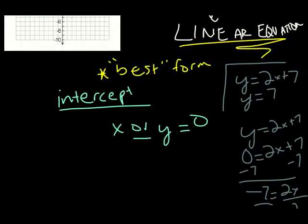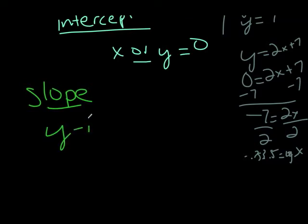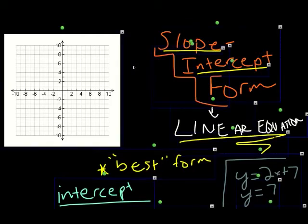The slope-intercept form will give you the slope of the line and the y-intercept right in the equation itself. I'm going to show you how slope-intercept form becomes useful in graphing equations. Let's say I have the equation 3x+2y=6.